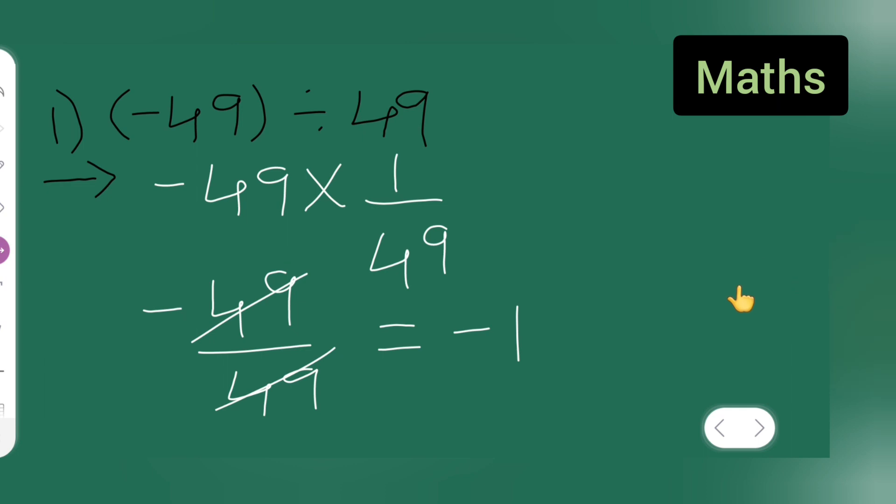So what you have done over here is minus 49 multiplied by 1 will be minus 49 upon 49. Then cancel this and you will get minus 1 will remain. So I hope you have understood how to divide and thanks for watching.